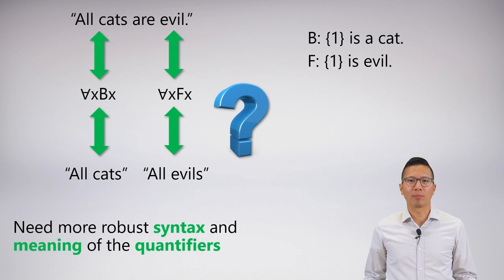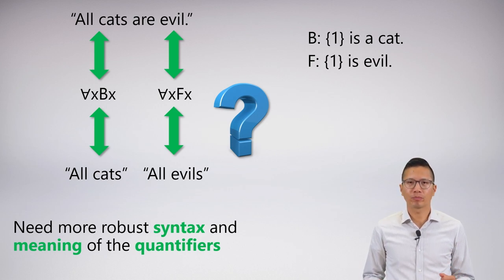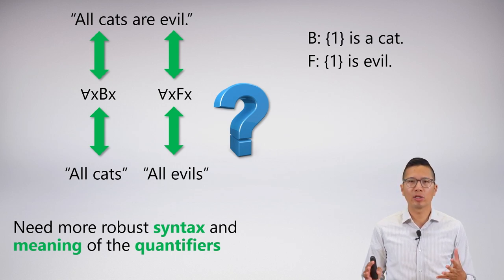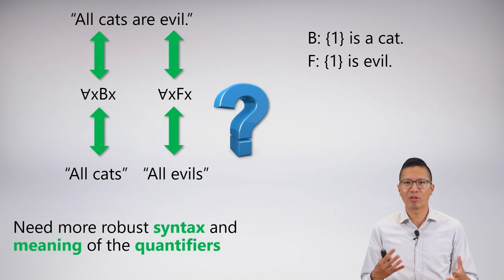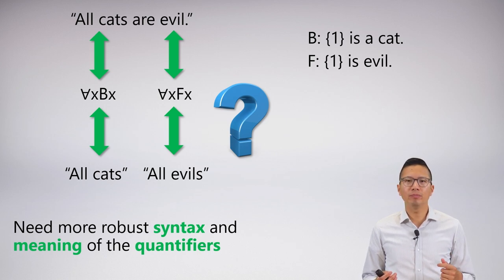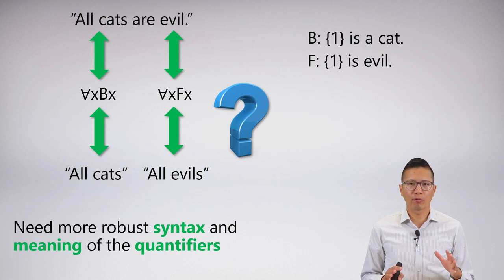Our goal is to symbolize something like 'all cats are evil.' As we saw a couple videos ago, we ran into some problems because we didn't really know how to connect everything together. We needed a robust syntax and meaning of the quantifiers. We've definitely covered our syntax, so now we're going to go over our quantifiers and start to symbolize.